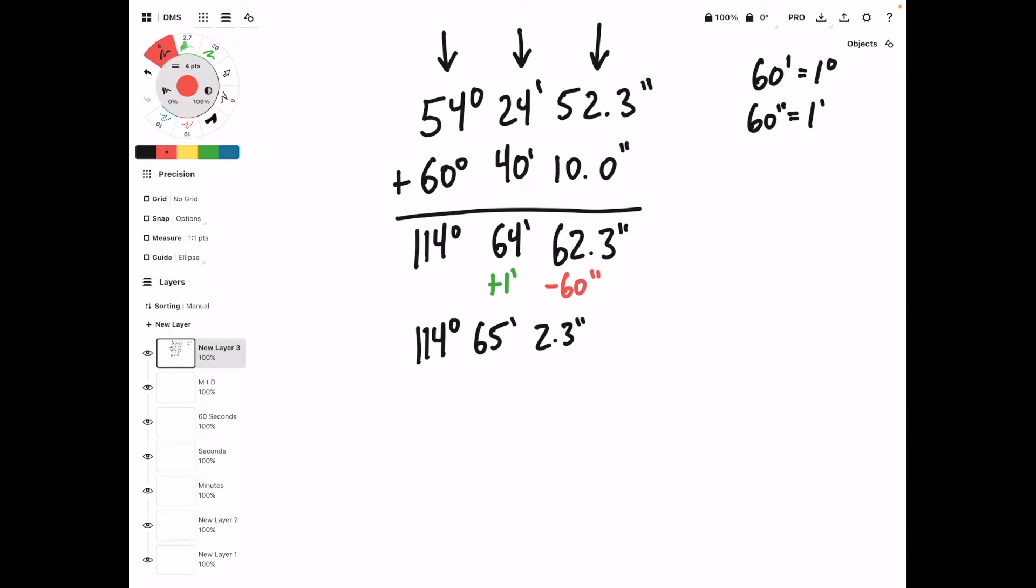Now we can do the same thing to the minutes column. Subtract 60 minutes, then we need to add 1 degree. Rewriting our angle, we now have 115 degrees, 5 minutes, and 2.3 seconds.